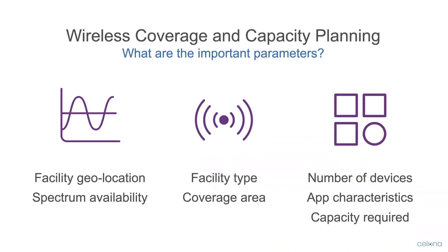The key criteria for wireless coverage and capacity planning of CBRS networks include facility geolocation based on address or GPS coordinates to determine spectrum availability from the spectrum access system, understanding the facility type and coverage area desired for the network, and determining the number of devices, application characteristics, and ultimate capacity required for the network.